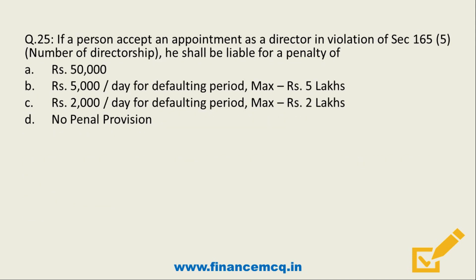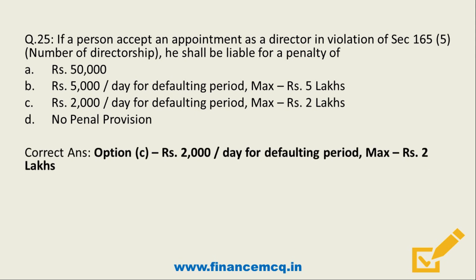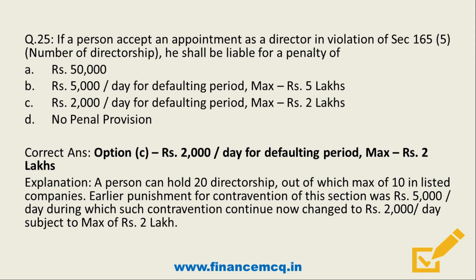Question 25. If a person accepts an appointment as a director in violation of section 165(5) — that is number of directorships — he shall be liable for a penalty of: option A Rs. 50,000, option B Rs. 5,000 per day for the defaulting period subject to a maximum of 5 lakh, option C Rs. 2,000 per day for the defaulting period subject to a maximum of 2 lakh, or option D no penal provision. The answer is option C — Rs. 2,000 per day for the defaulting period subject to a maximum of Rs. 2 lakh. A person can hold 20 directorships, of which maximum 10 in listed companies. Earlier the punishment was Rs. 5,000 per day; through this amendment it is reduced to Rs. 2,000 subject to a maximum of Rs. 2 lakh.